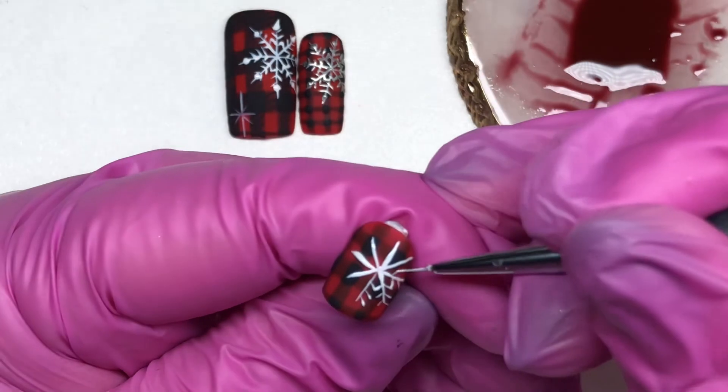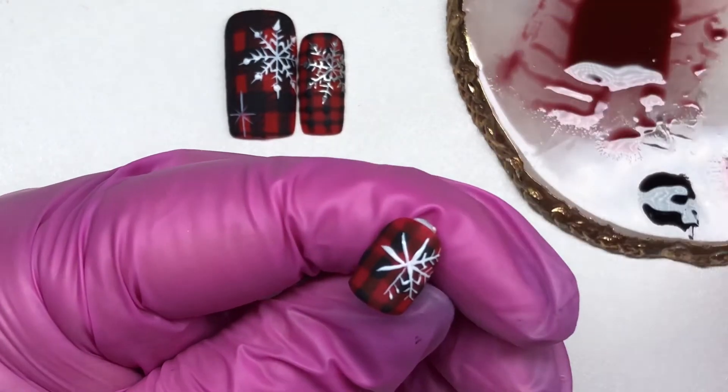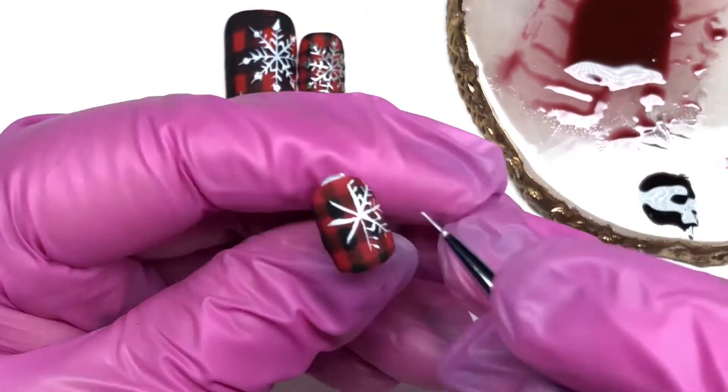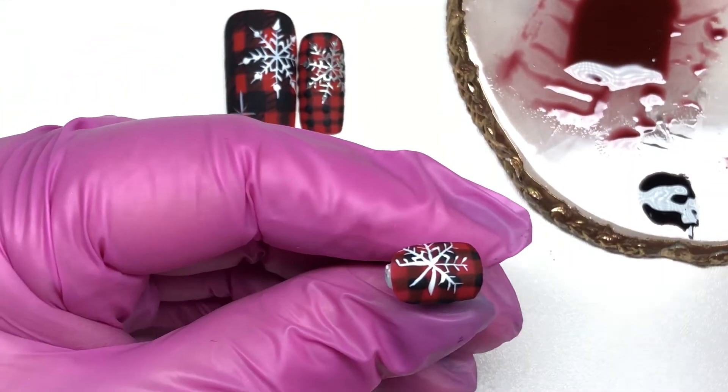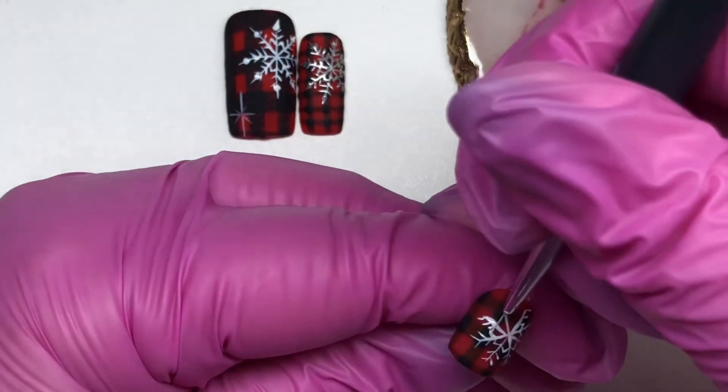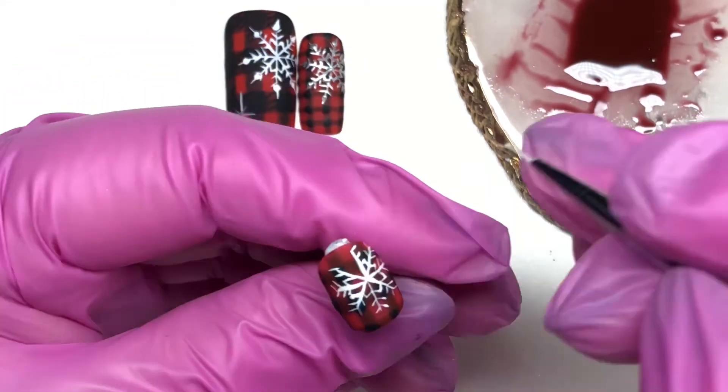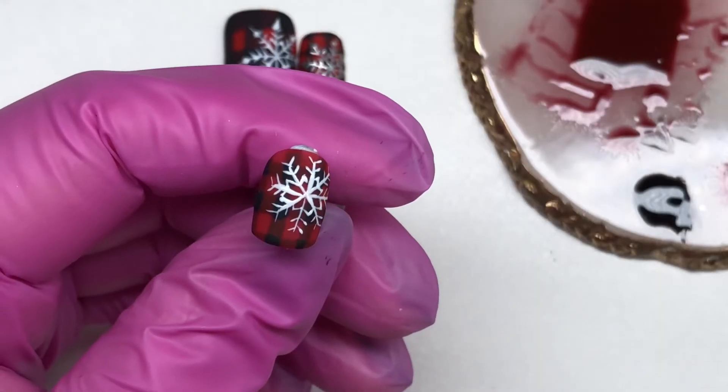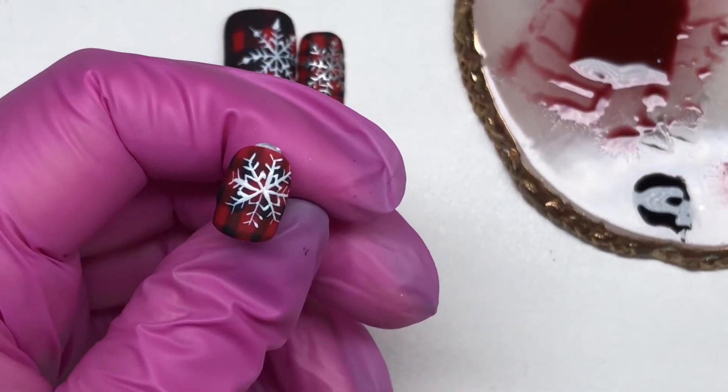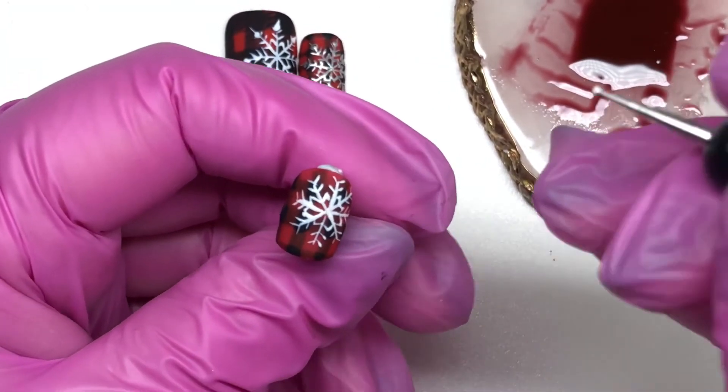This nail is so tiny. Just for reference, this is a size 6 nail, so that's a very standard nail size for like a ring finger maybe or a pointer finger. I like to practice on realistic size nails, not just on the size 0 thumbnails.